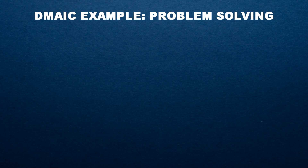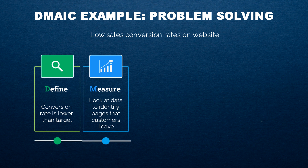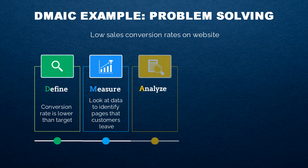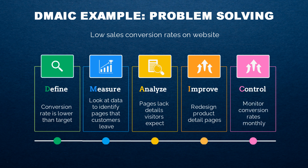DMAIC example: Problem solving — low sales conversion rates on website. Define: The website conversion rate, from unique visitors to actual sales, is lower than the target 2% rate this quarter. Measure: Look at clickstream data to identify the most common entry and exit pages and factors leading visitors to leave. Analyze: Perhaps product pages lack images and details that visitors expect, causing them to abandon purchases. Improve: Redesign product detail pages, adding more dynamic visual content and buyer information. Control: Keep monitoring conversion rates by page monthly and optimize pages further as needed.